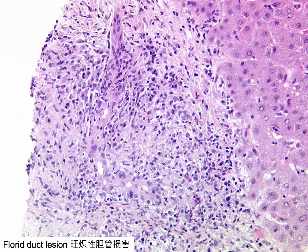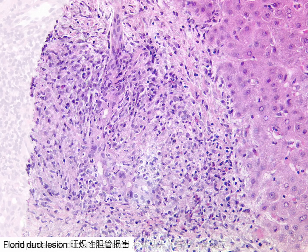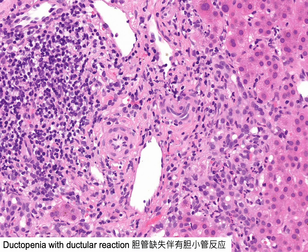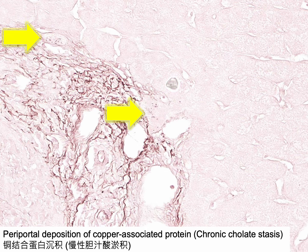This portal tract features a florid duct lesion, characterized by a damaged interlobular bile duct surrounded by a dense lymphohistiocytic infiltrate. A portal tract displays an unpaired hepatic artery lacking its accompanying interlobular bile duct, with a prominent ductular reaction. The presence of copper-associated protein in periportal hepatocytes indicates chronic cholestasis, signifying prolonged retention of bile acids and salts in hepatocytes due to persistent impairment of bile flow. Feathery degeneration is another histological indicator of chronic cholestasis.